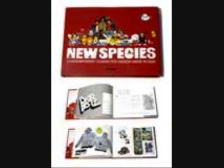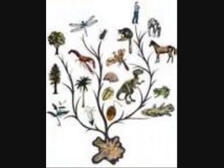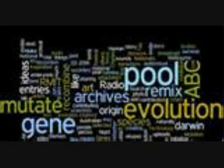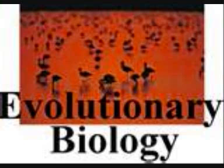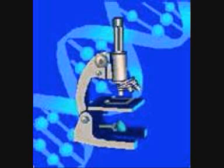The similarities between all living things suggest that all known species are descended from a common ancestor, or rather a common ancestral gene pool, although this is a process of gradual divergence — it took a long, long time. Evolutionary biology documents the fact that evolution occurs and also develops tests and theories that explain the causes.